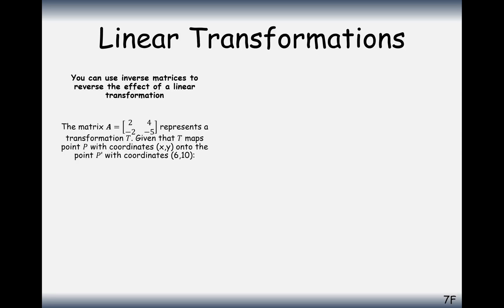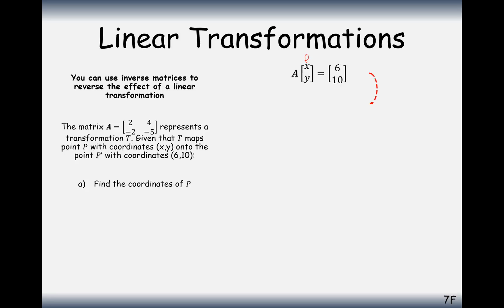Let's look at a second question where we use a similar idea. The matrix A is [2, 4; -2, -5] and it represents transformation T. Given that T maps point P with coordinates (x, y) onto the point (6, 10), find the original coordinates. What we have is matrix A times coordinate P equal to (6, 10). The way we work out the coordinate (x, y) is by pre-multiplying both sides by the inverse A matrix.